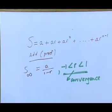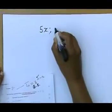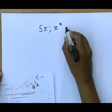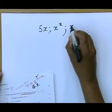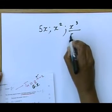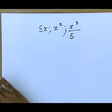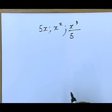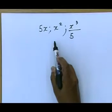So in this question, you are asked to determine from the following. You are asked to determine from the given sequence 5x, x squared, x to the power 3 over 5. You are asked to determine when that sequence will converge. Obviously the convergence applies to the geometric sequence.